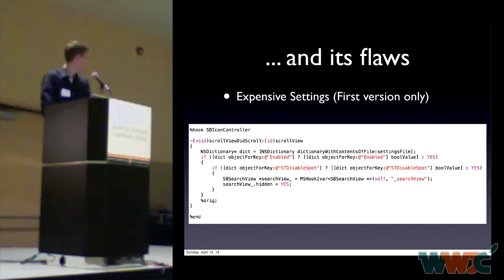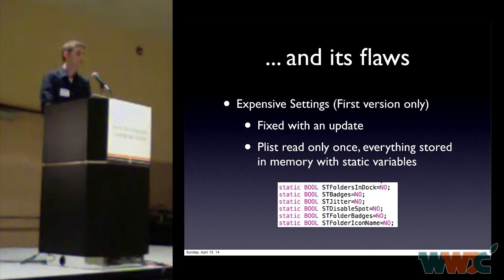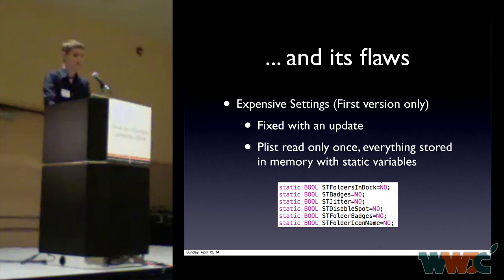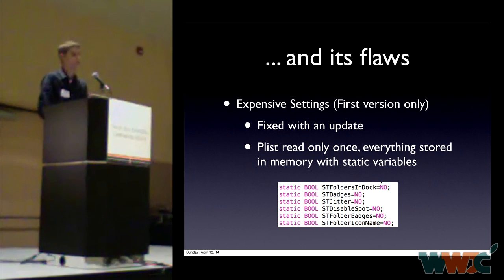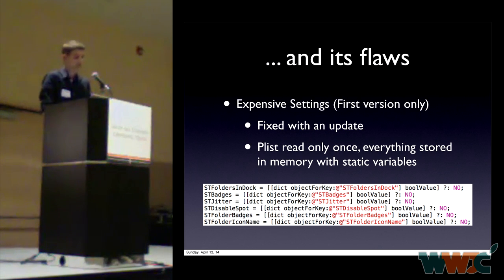That was improved with the second update, which came out a couple of weeks later. Now the property list was read only once when Springboard loaded, and every option was stored in memory using static variables. Static variables are variables visible only within a single code unit, so they cannot easily be used across multiple files. Everything was loaded only once at the moment Springboard started.